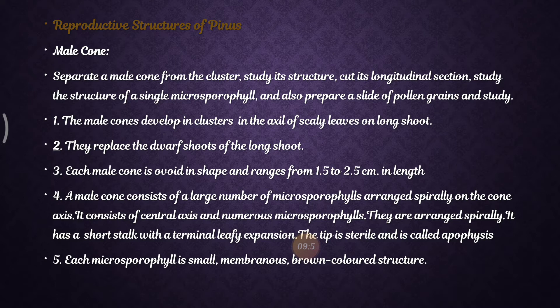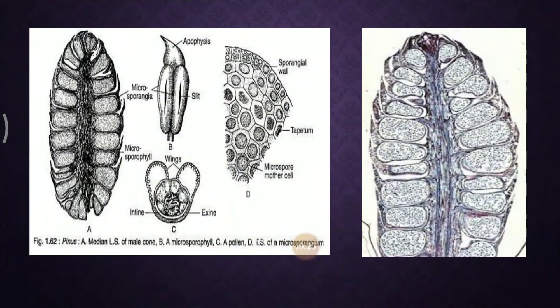The male cone consists of a central axis and numerous microsporophylls. Microspores are seen in the male cone. The microsporophylls are spirally arranged; each is a small leaf-like structure with a short stalk and a terminal leafy expansion. The tip is sterile and is called the apophysis — this is an important term.